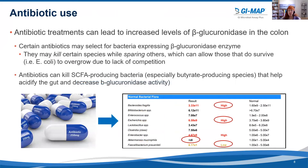Another possible reason for elevated beta-glucuronidase is antibiotic use. Antibiotic treatments can lead to increased levels of beta-glucuronidase in the colon, because certain antibiotics may select for bacteria expressing the beta-glucuronidase enzyme. Antibiotics may kill certain species while sparing others — such as E. coli — allowing those that survive to overgrow due to lack of competition. Antibiotics also seem to preferentially kill short-chain fatty acid-producing bacteria, especially butyrate-producing species that help acidify the gut.